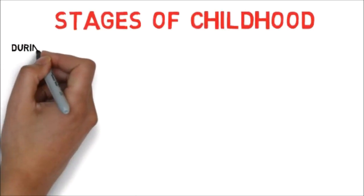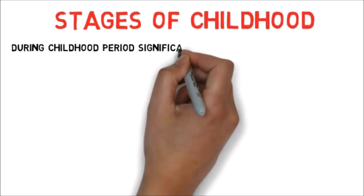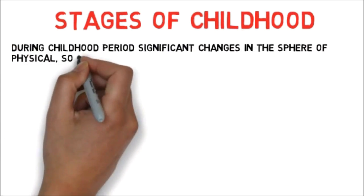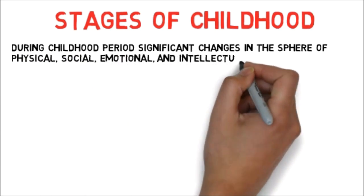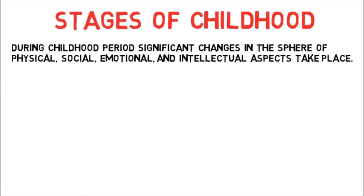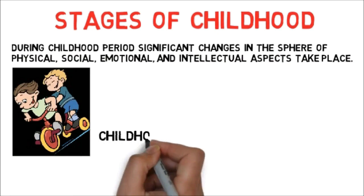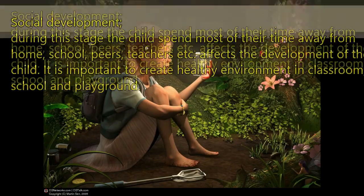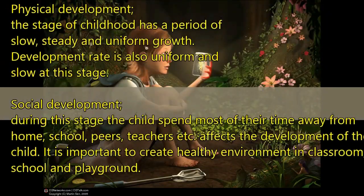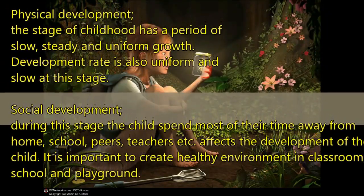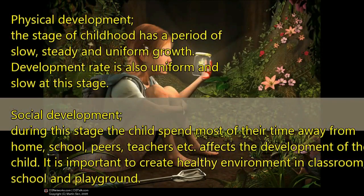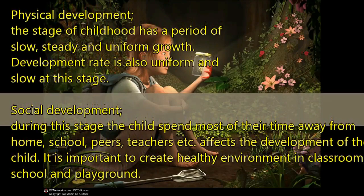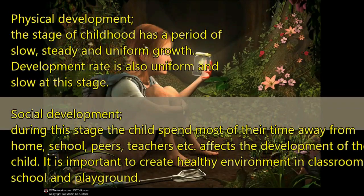Stages of childhood: during the childhood period, significant changes in the sphere of physical, social, emotional, and intellectual aspects take place. Childhood starts from 3 to 12 years, up to the onset of puberty. Physical development during the childhood stage has a period of slow, steady, and uniform growth. The development rate is also uniform and slow at this stage.